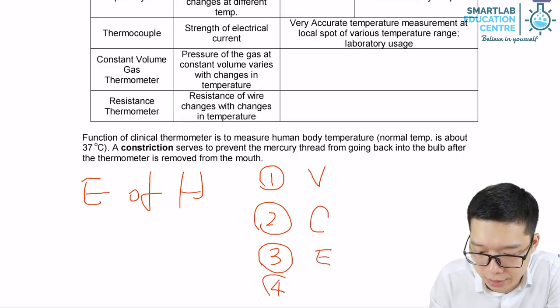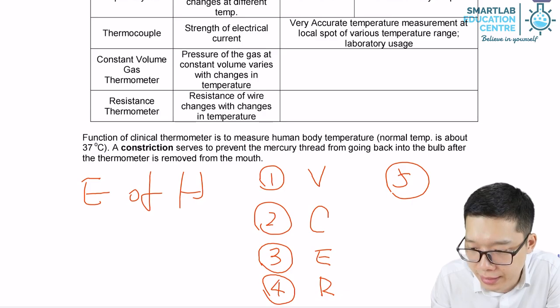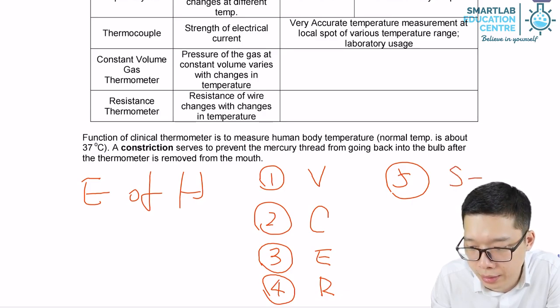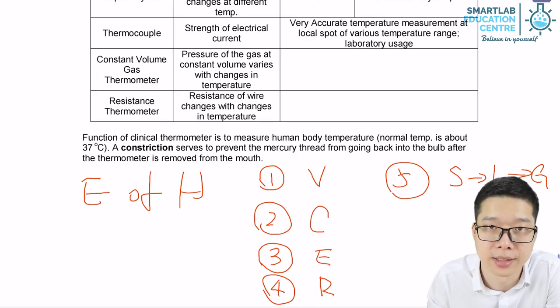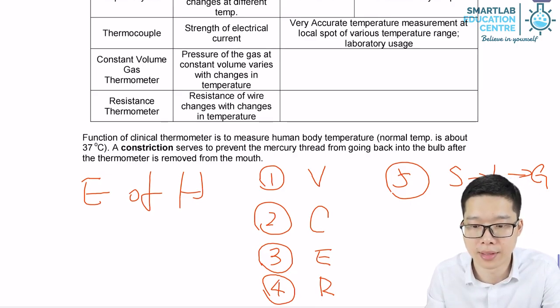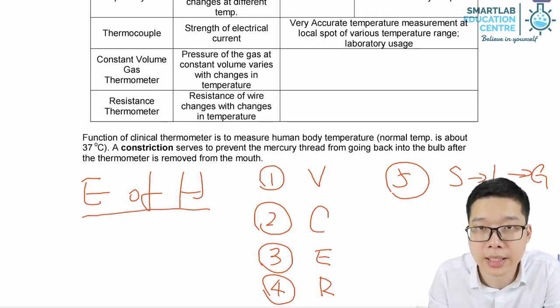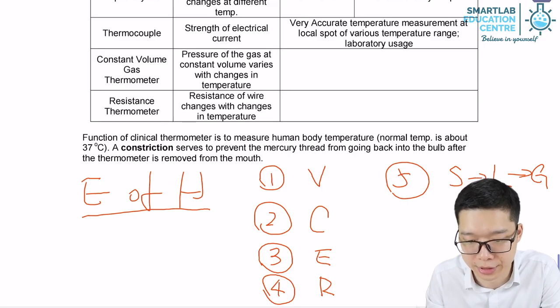It can be resistance of wires, and lastly it can be changing state from solid state to liquid state and to gaseous state. And that's all for effects of heat energy.